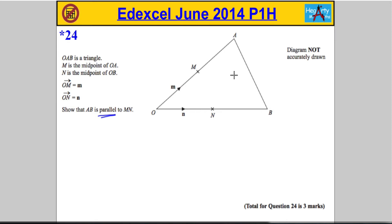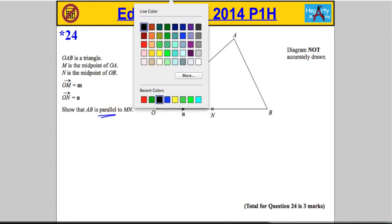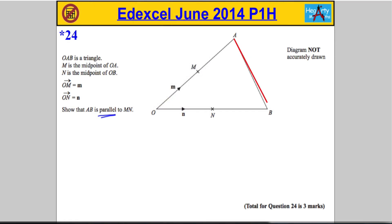So essentially it's asking to show that this line here, AB, let's just highlight it or draw over it, so this line here from A to B is parallel to this line here from M to N.